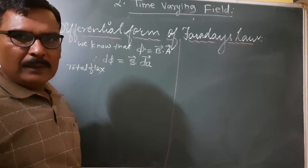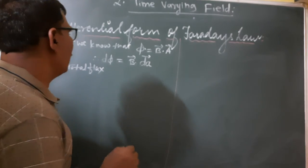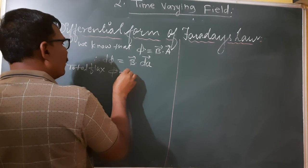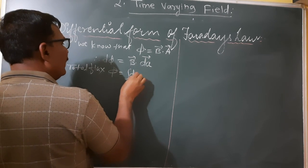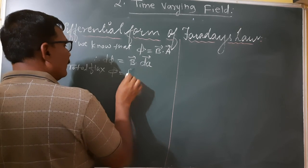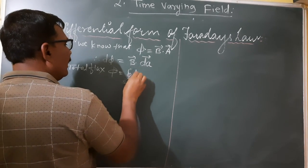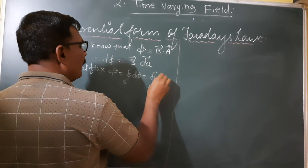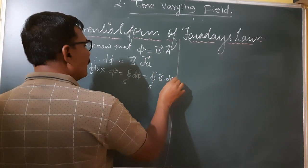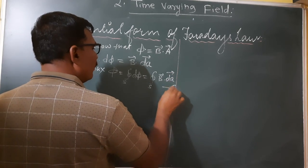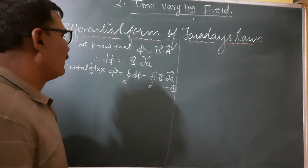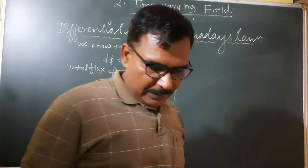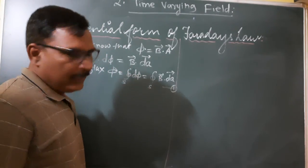When we consider the total flux, we integrate this equation. So total flux phi equals the surface integration of d-phi, which equals the surface integration of B-bar dot dA-bar. This is equation one — the total flux equation.